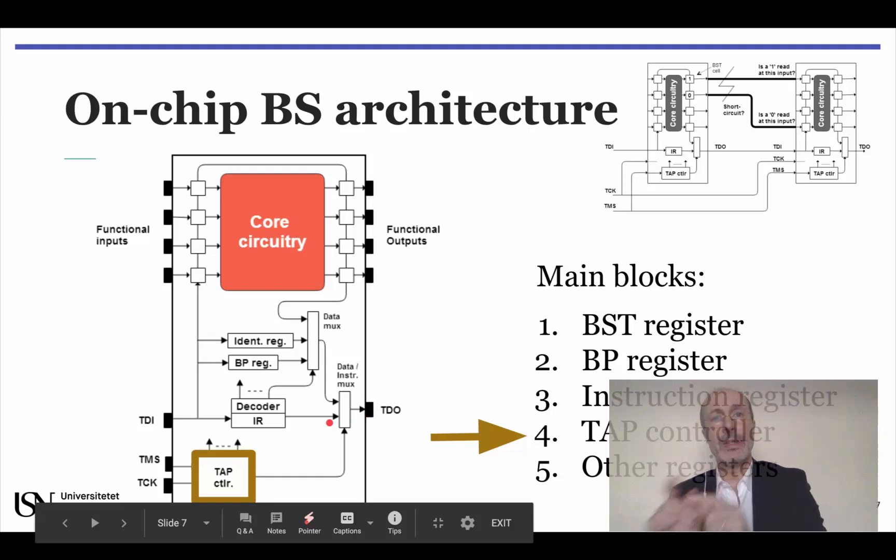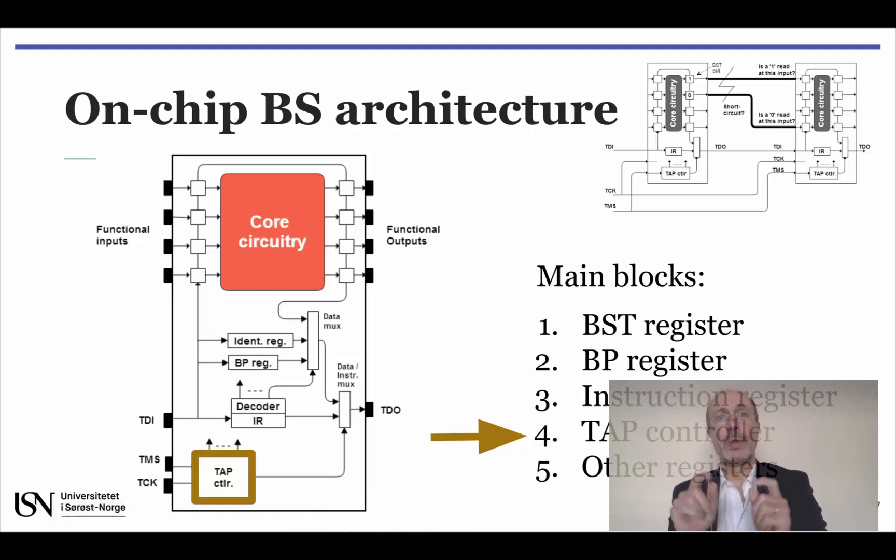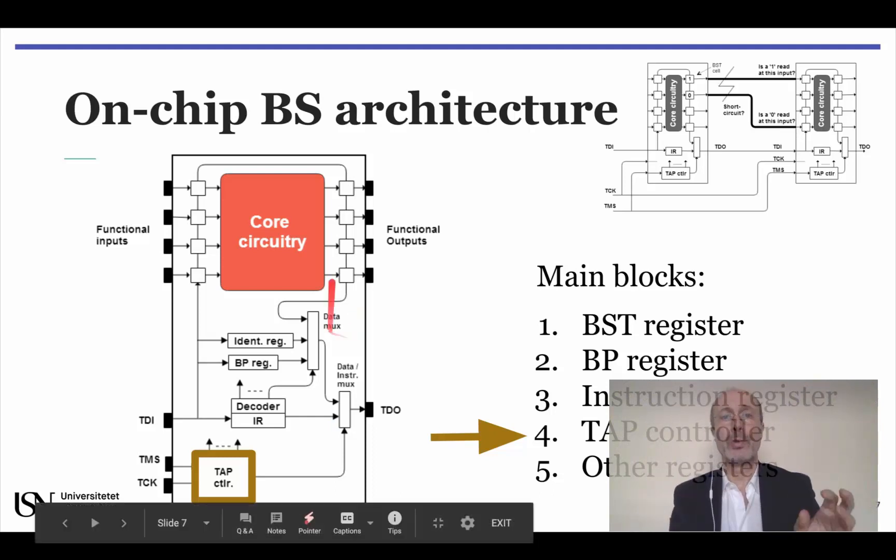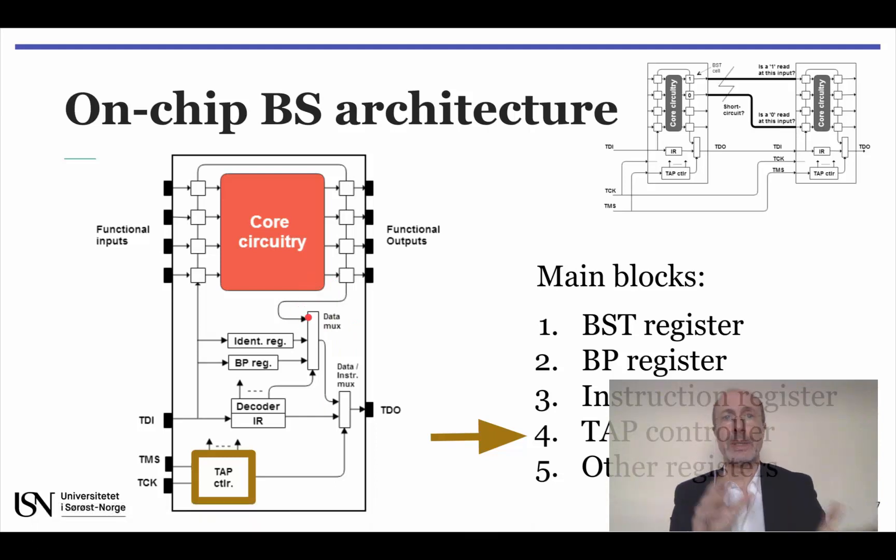So as to bring the TAP controller to the state that sets the data instruction multiplexer to the required operating mode. We can then shift in an instruction which will define how the data multiplexer is going to work, and we are finally able to start shifting in and out test vectors and test responses. Throughout this process, the TAP controller will transition to different states as required by each test operation, as we will see in a following presentation.